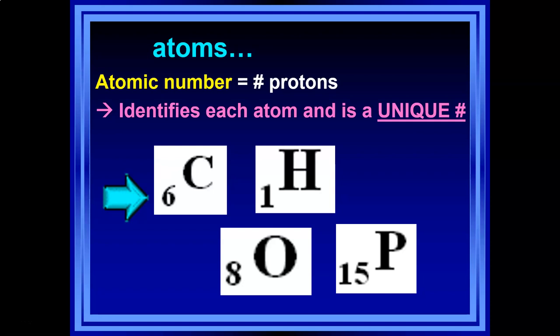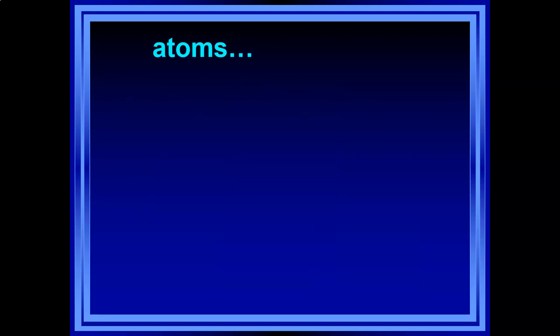Let's think that through with carbon. Carbon has six protons — those are the positive charges. If it's neutral, it would cancel out an equal number of electrons, so you'd have six electrons. The first positive cancels the first negative, the second cancels the second, and so on through the sixth — no positives left over, no negatives left over. If carbon is neutral, it has six protons and six electrons. That's atomic number.